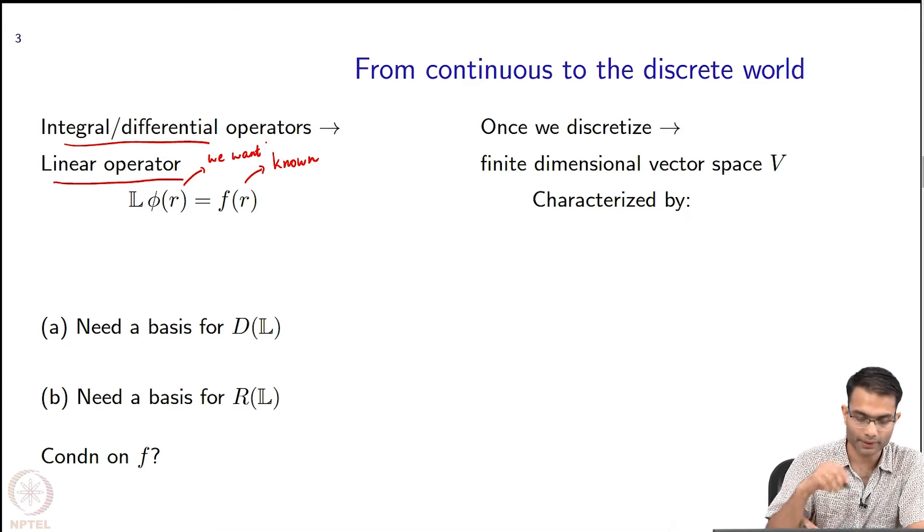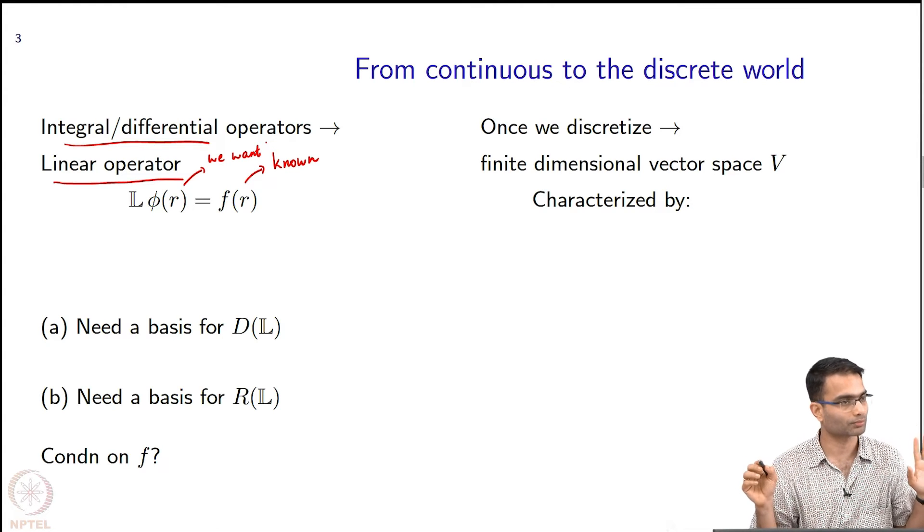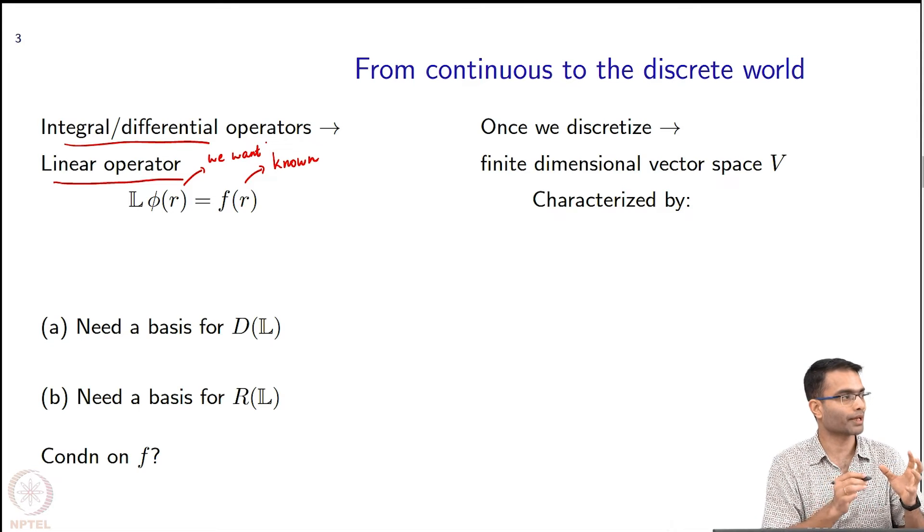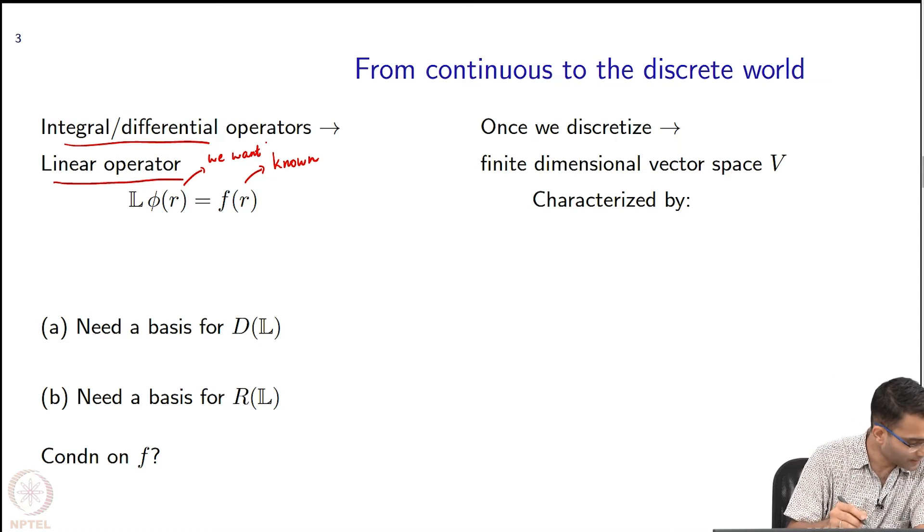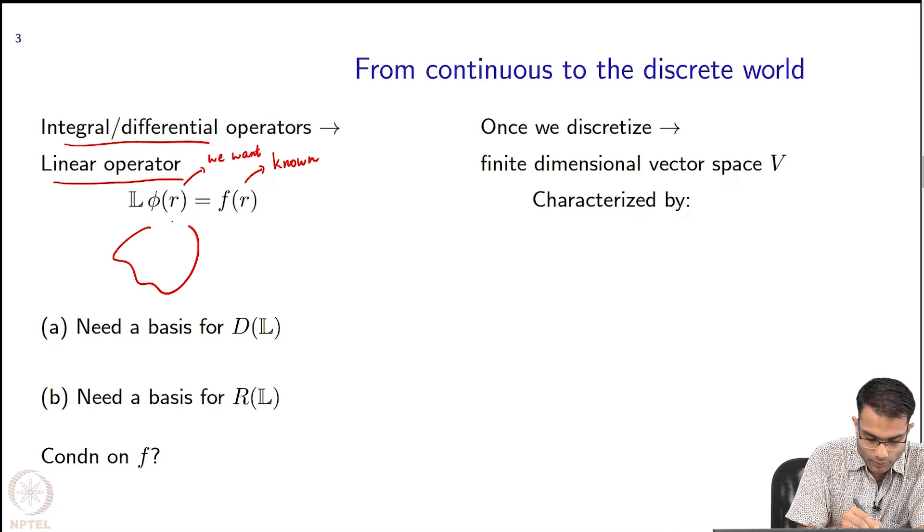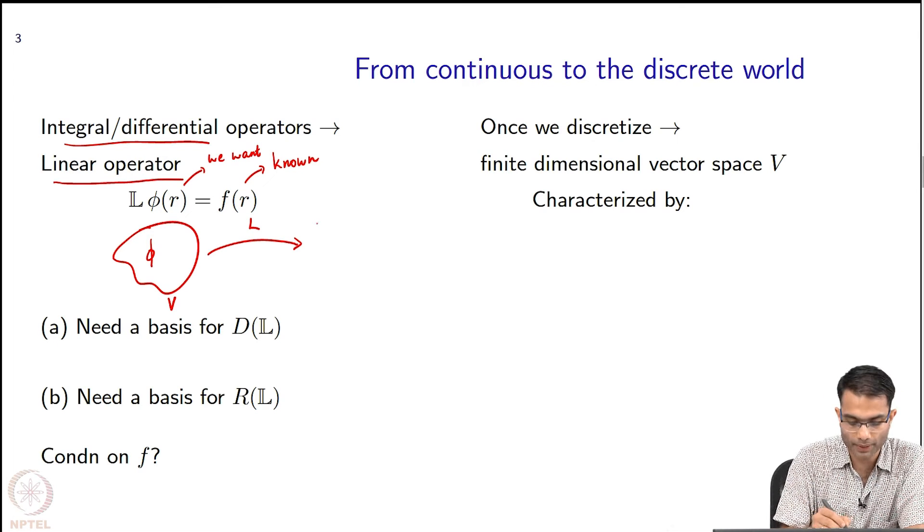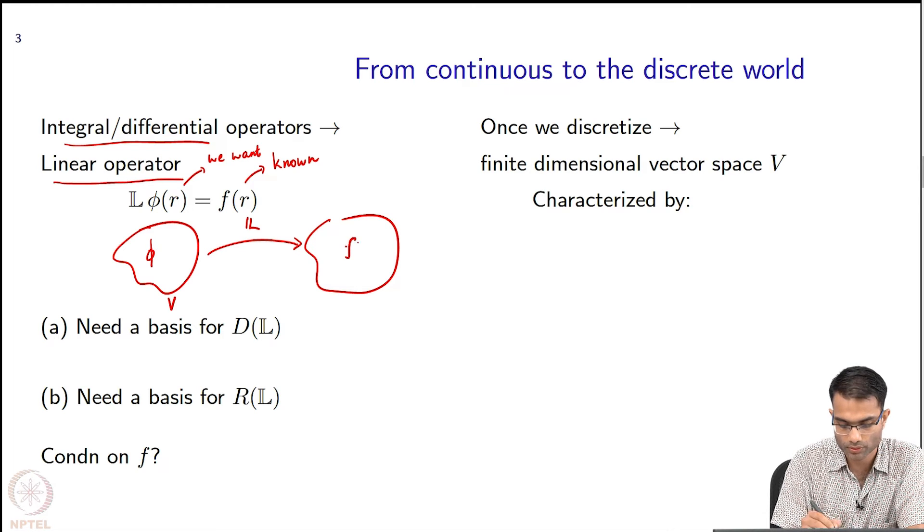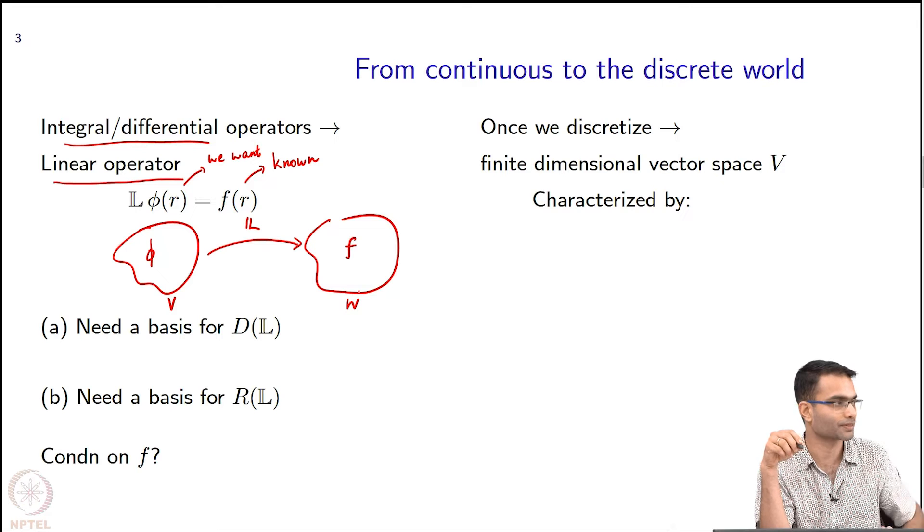Now, in terms of an operator, right now we have not discretized anything, it's just an operator. So what does any operator do? It is going to take one space to another space. So I can say that phi lives over here, and the operator takes it—let us call this some space V—and the operator over here, this L, takes it to another space over here, W. At least we hope that f is in this space.